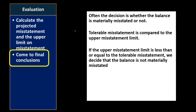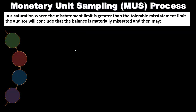Tolerable misstatement is compared to the upper misstatement limit. If the upper misstatement limit is less than or equal to the tolerable misstatement, we conclude the balance is not materially misstated — which is the conclusion we are hoping for.